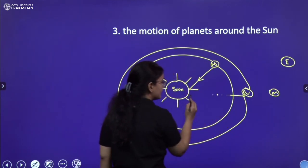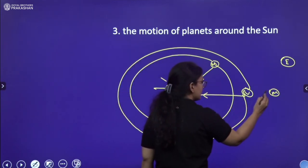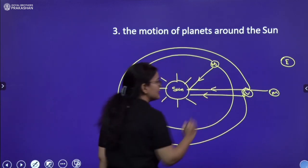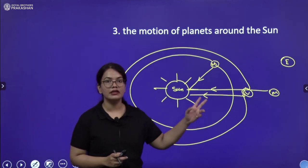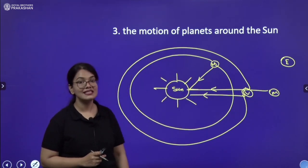All these planets they are attracted by the sun and this attractive force is acting like a centripetal force which is keeping all these planets in the circular orbit or in the elliptical orbit around the sun.